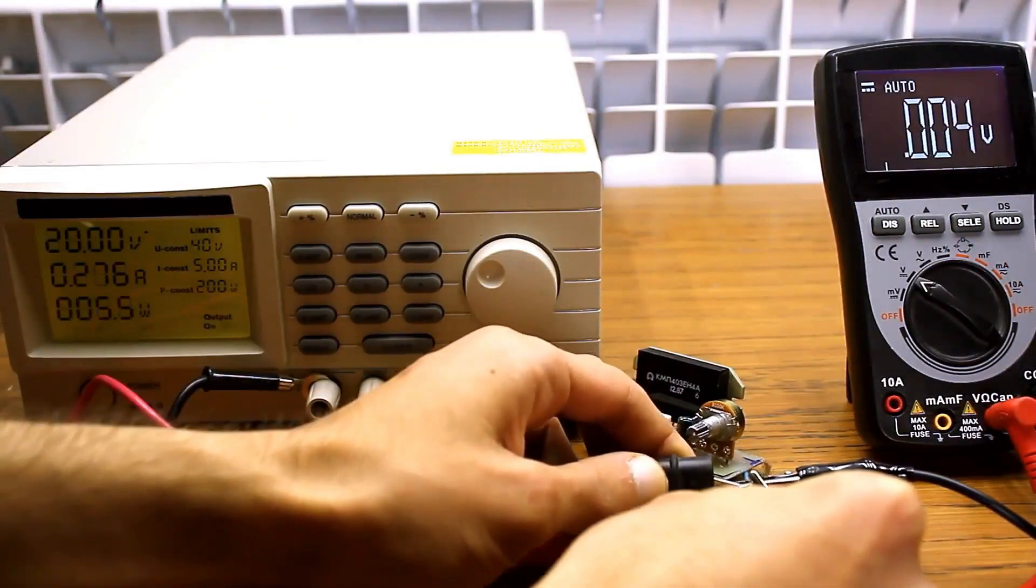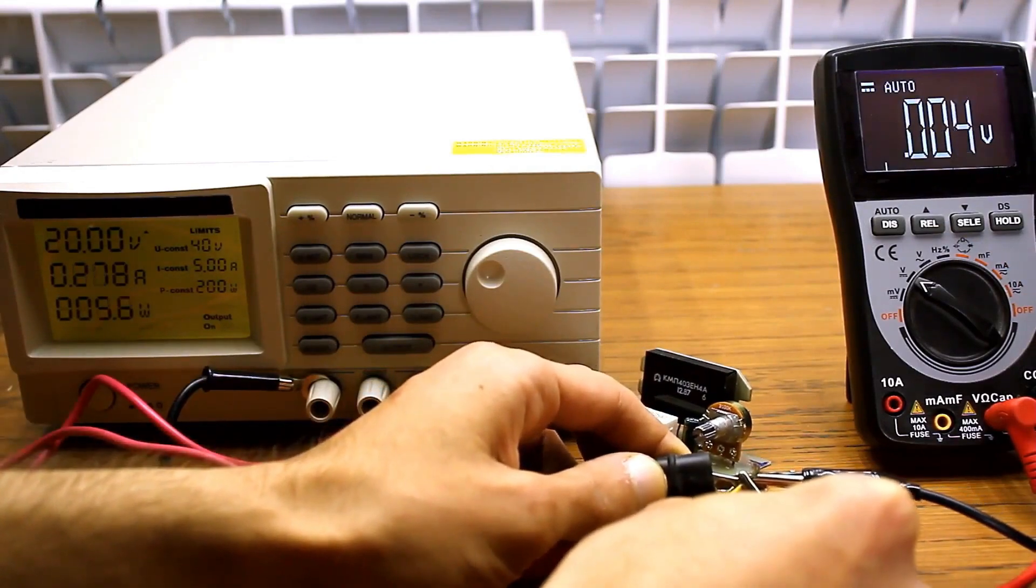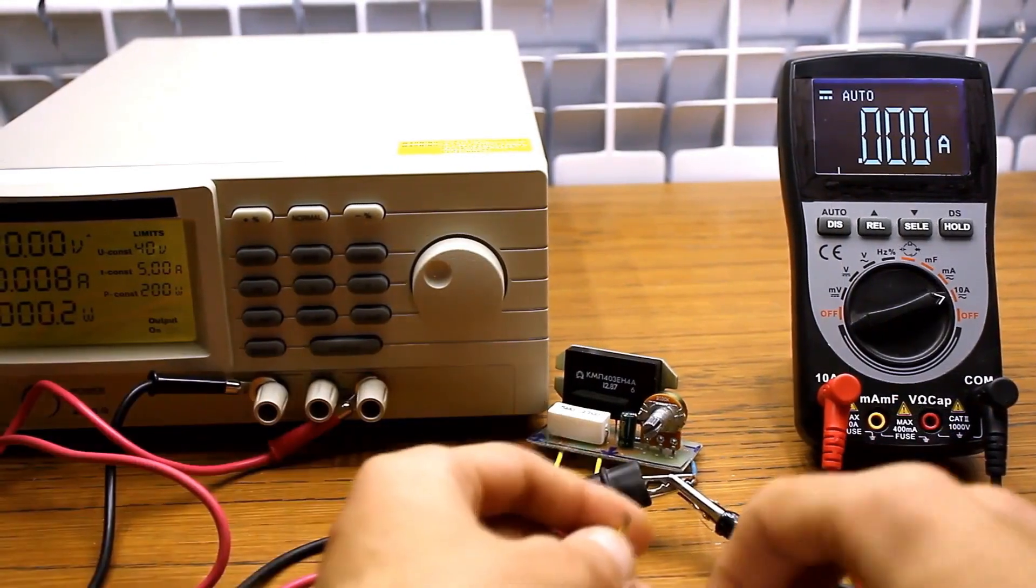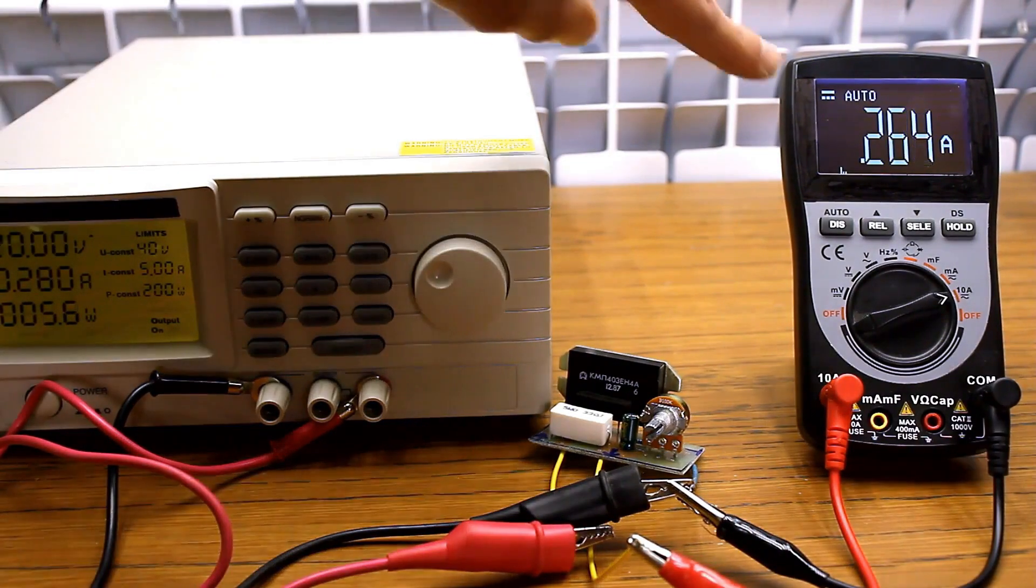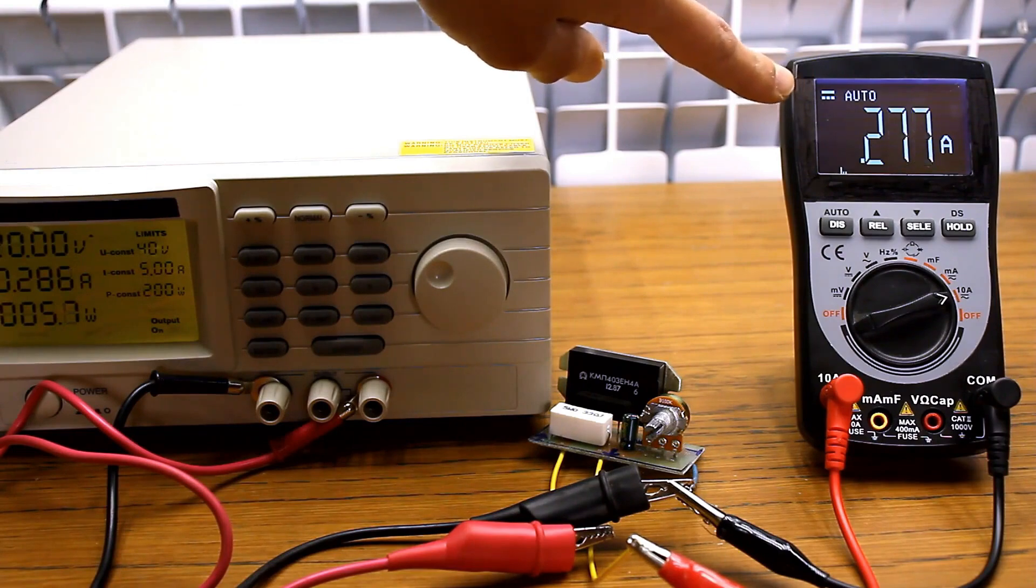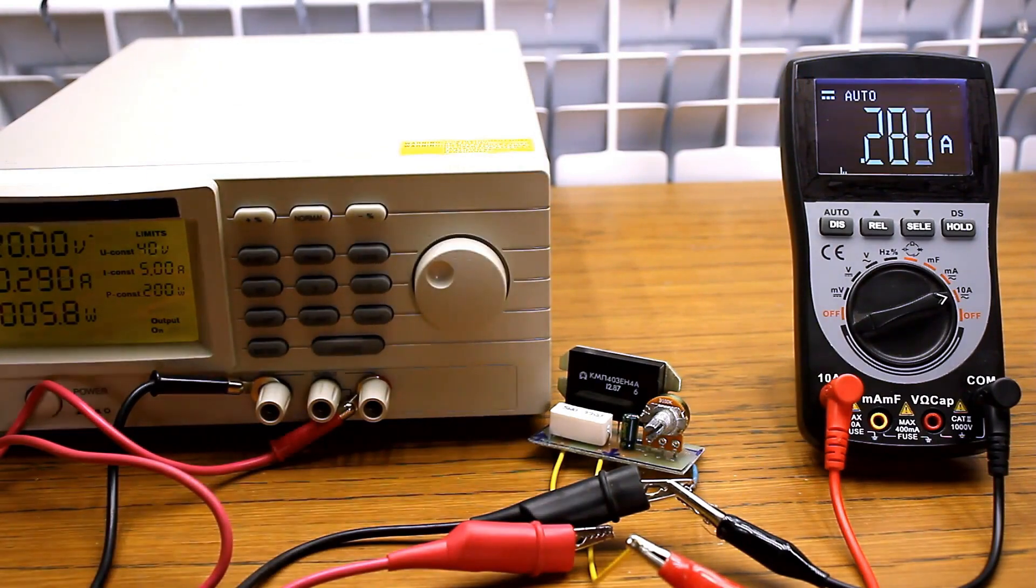The stabilizer handles short circuits very calmly. Moreover, in short circuit mode, the output current is limited to 280 mA. With a good heatsink, the stabilizer can remain in short circuit mode indefinitely, for a long time.